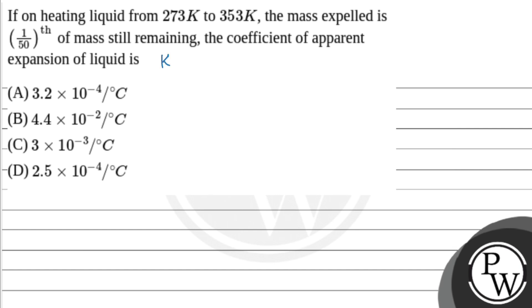Let's see the key concept involved here. The key concept is gamma apparent equals mass expelled upon mass remaining into delta T. Gamma apparent is the coefficient of apparent expansion.